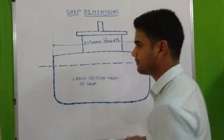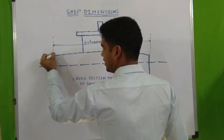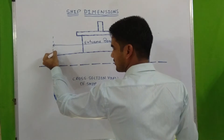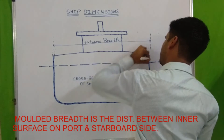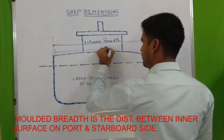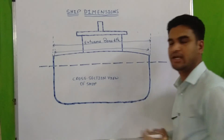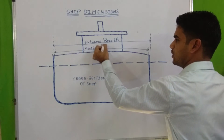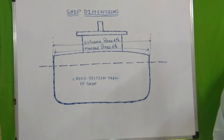Next we have molded breadth. Molded breadth means the distance between the inner surface of hull plating on port and starboard side. This is the inner surface on the port side and this is the inner surface on the starboard side. The distance between these two is known as molded breadth. This is also measured at the midship point, measured transversely.